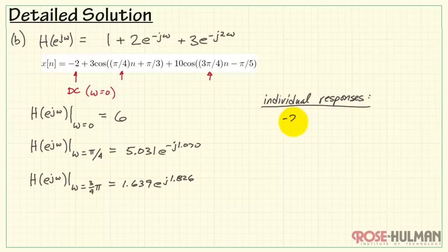Now we can find the individual responses. So, the input has a DC value of minus 2. Our system multiplies that by a gain value of 6. We end up with minus 12.